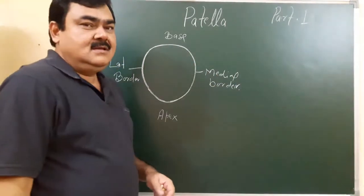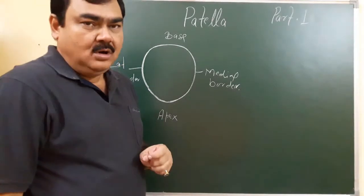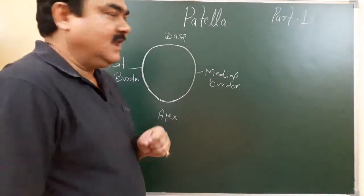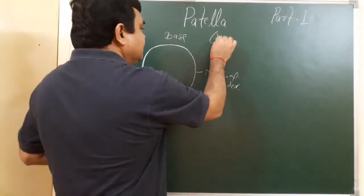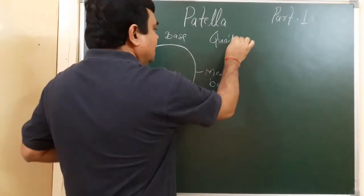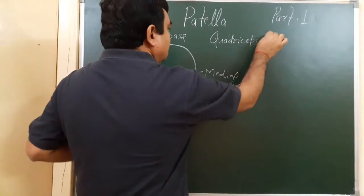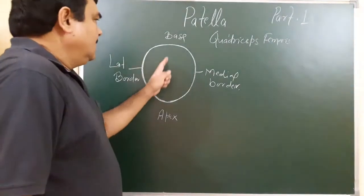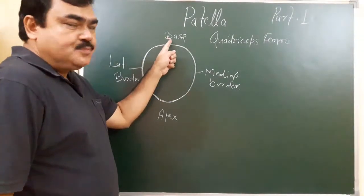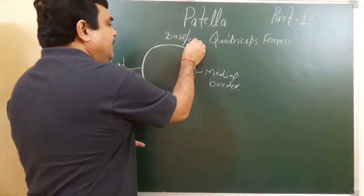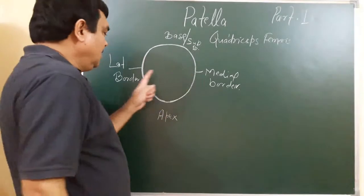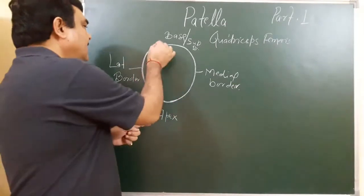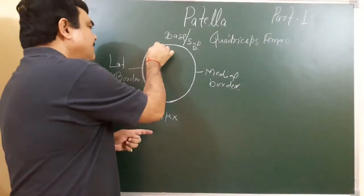The patella is the largest sesamoid bone, present in the tendon of the quadriceps femoris muscle. It has a base or superior border, a medial border, a lateral border, and an apex. Its shape is like a small plate.